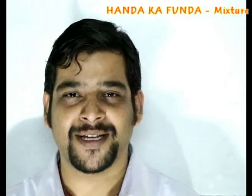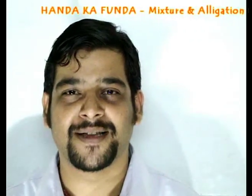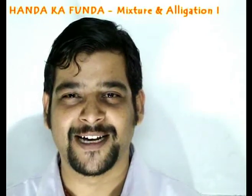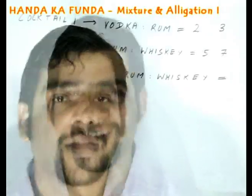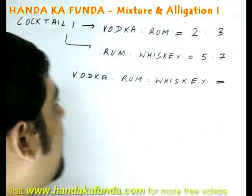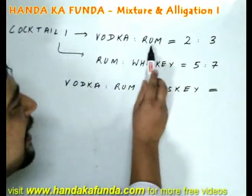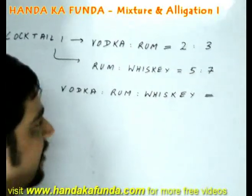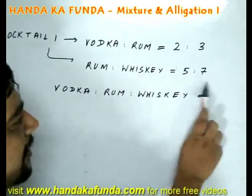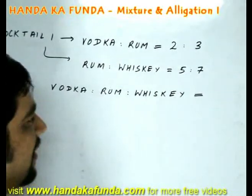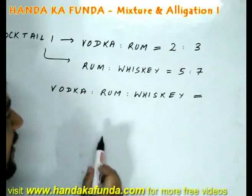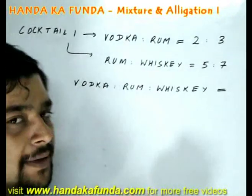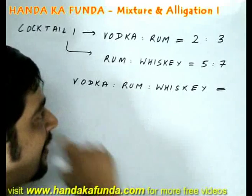Hello and welcome to the session on mixtures and allegation, brought to you by Handa Ka Funda. Suppose a particular cocktail has vodka and rum in the ratio of 2 to 3, and rum and whiskey in the ratio of 5 to 7. The question is: what is the overall ratio of vodka to rum to whiskey in the entire cocktail?